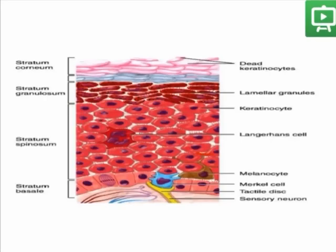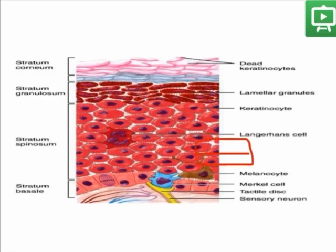The melanocytes as well as the Langerhans cells are all dendritic cells which have long processes. Melanocytes and the Merkel cells are located mostly in the basal cell layer. The Merkel cells have sensory function, so they can attach to sensory neurons and fibers.